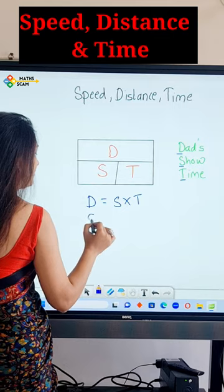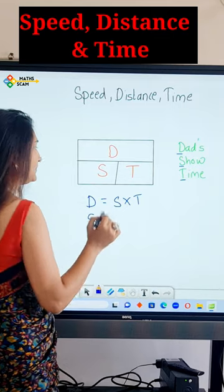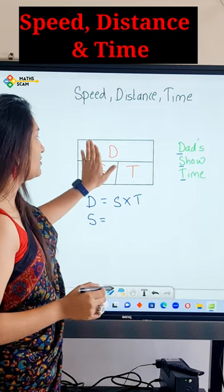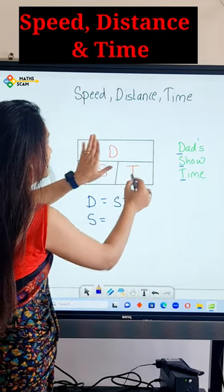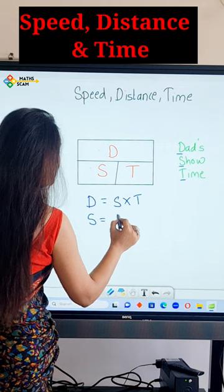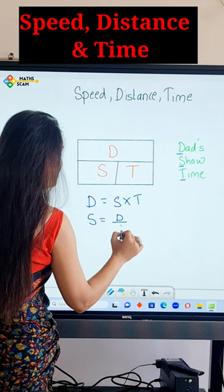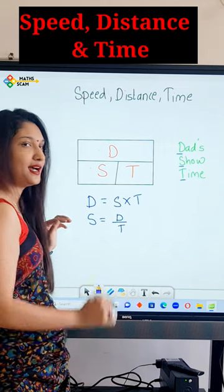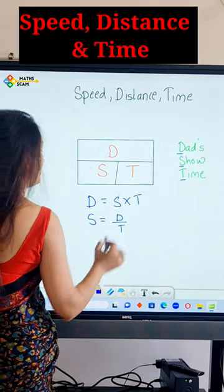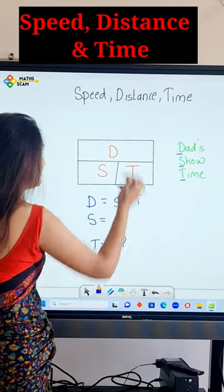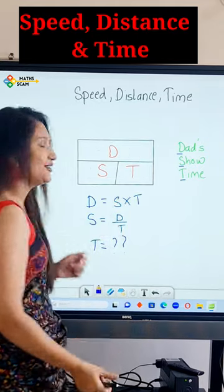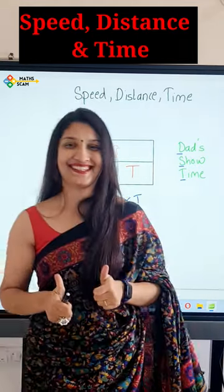Then for the formula of speed, you hide S, and it will be distance upon time — D divided by T. Now, what will be the formula for T? Please answer in the comments. Thank you so much!